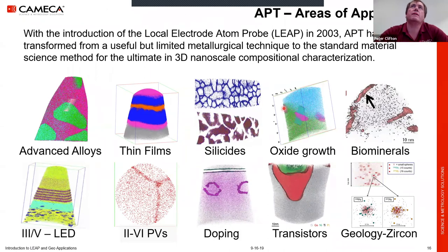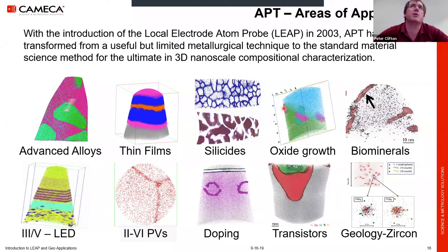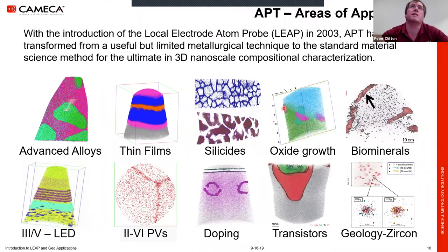Atom Probe has a relatively long history from the seventies through the nineties as a niche metallurgical technique, but in the last 15 years with the introduction of laser mode, the range of uses has expanded dramatically. We're no longer limited to looking at electrically conducting materials. Analysis is now used across a very wide range of material science — functional materials and devices, geological materials and rocks — and we're moving into soft and biological materials as well.